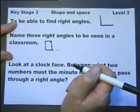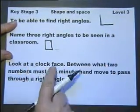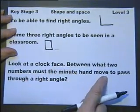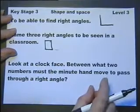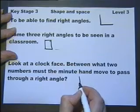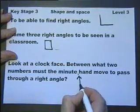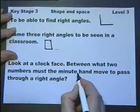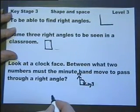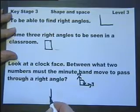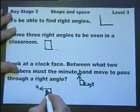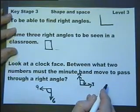Name three right angles to be seen in the classroom. Look at the clock face. Between what two numbers must the minute hand move to pass through a right angle? Now in fact you can give lots of answers on this one. You could say, pointing at 12, and then pointing at 3. Pointing at 12 and pointing at 3, that would move through 90 degrees. Or you could say, pointing at 6, and pointing at 9. That would move through 90 degrees. And there are actually lots of other possibilities.